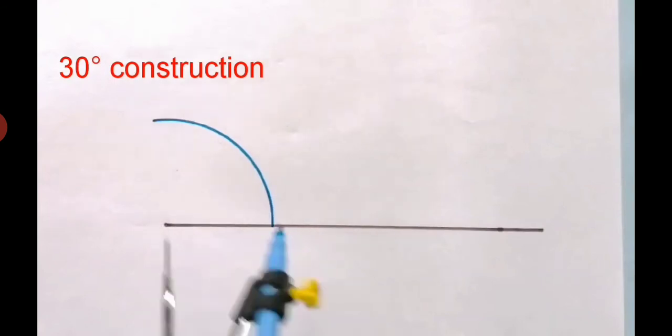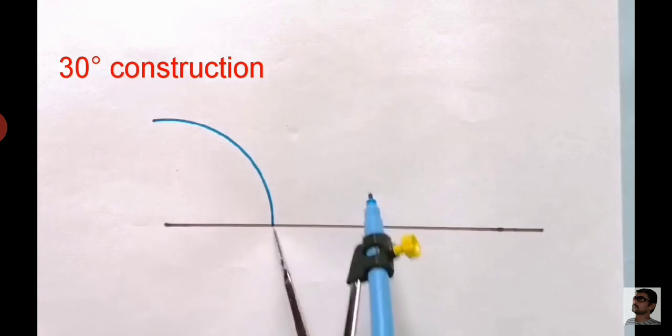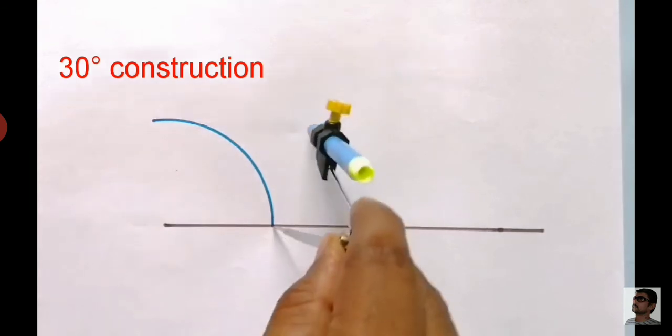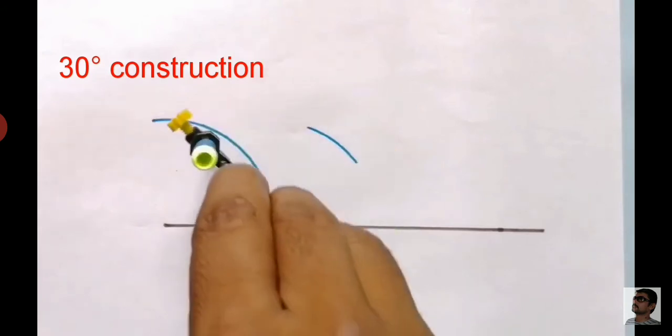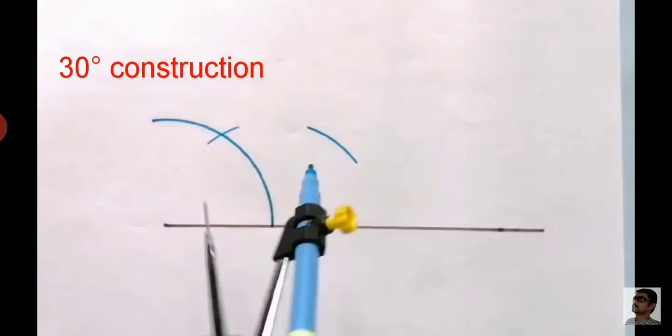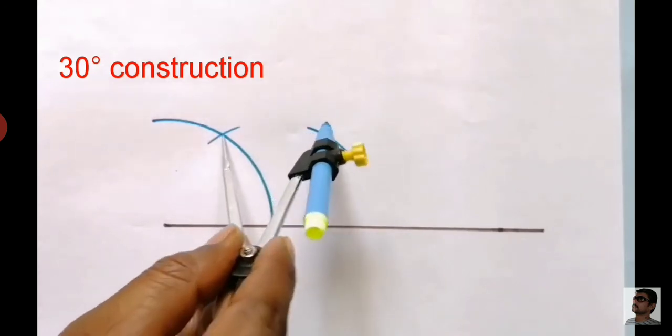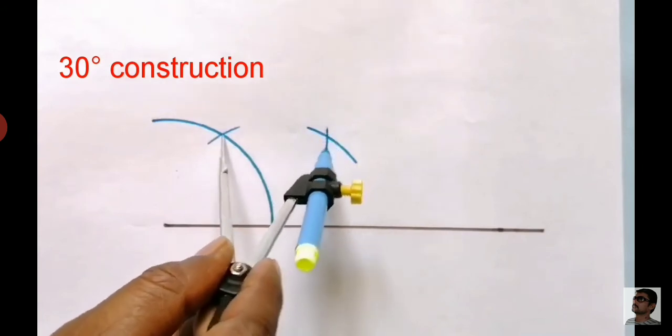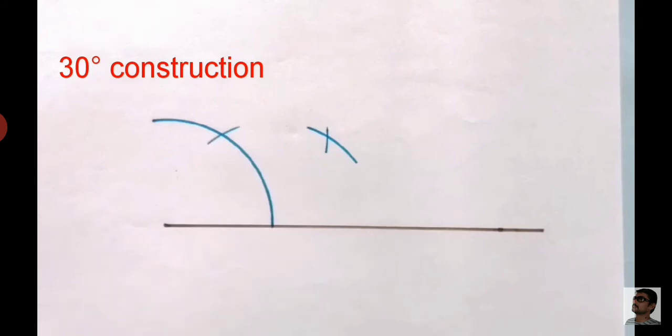The semicircle cuts the line segment at a point. Put the compass pointer at this new point and without changing the radius, draw an arc which intersects the circle and one more arc as shown. Put the compass pointer at the 60-degree arc and draw another arc which intersects the previous arc.